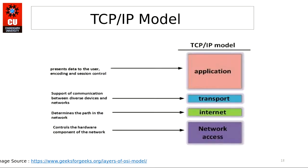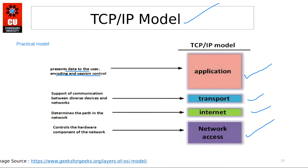Now coming to the second model — the TCP/IP model. The OSI model is theoretical; the TCP/IP model is practical and currently used by many companies as their standard. In the TCP/IP model we have only four layers: Application layer, Transport layer, Internet layer, and Network Access layer. The Application layer here handles the functions of three OSI layers — Application, Presentation, and Session.